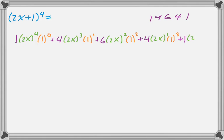And we keep going. And finally, here we have quantity 2x to the 0, and 1 to the 4th. And we can simplify this. So it simplifies pretty quickly.